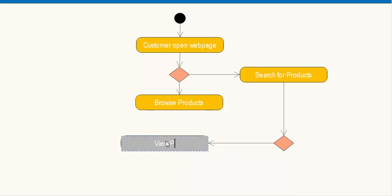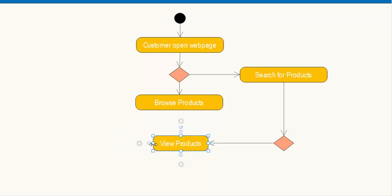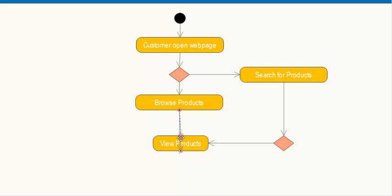When the product is found — whether through search or browsing — the customer views the product. Both paths lead to the view product activity.